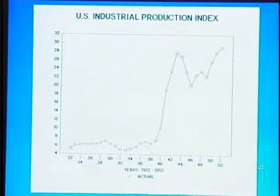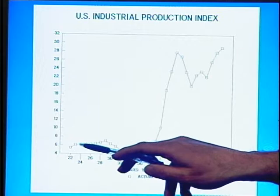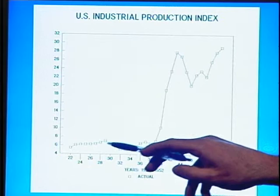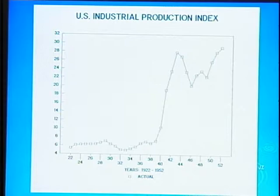Here we can see what happened in terms of industrial production. During the Roaring Twenties, industrial production is actually increasing — it's not just money exploding with nothing being produced. Industrial production rises until the crash in 1929, and then things start going downhill dramatically. The index drops roughly 30 to 40%. This is a product of bad policy under the Hoover administration — simply trying to balance the budget.